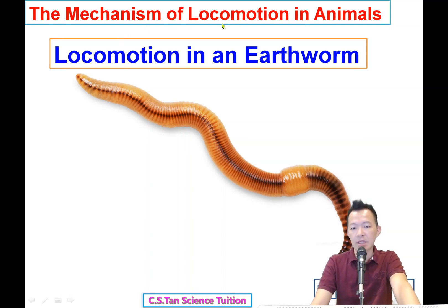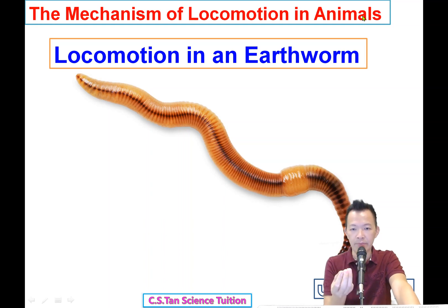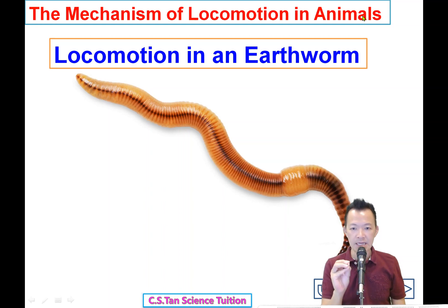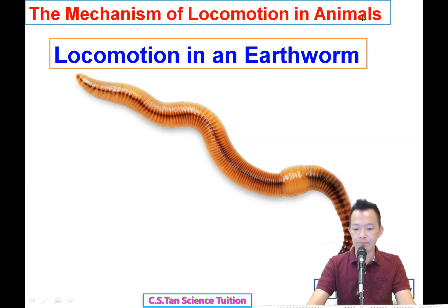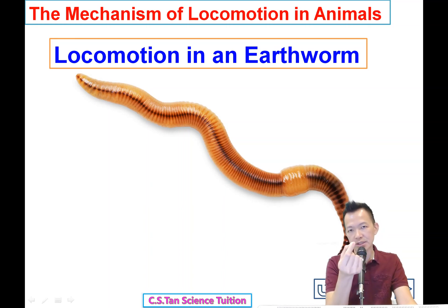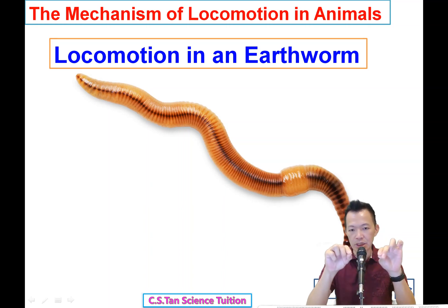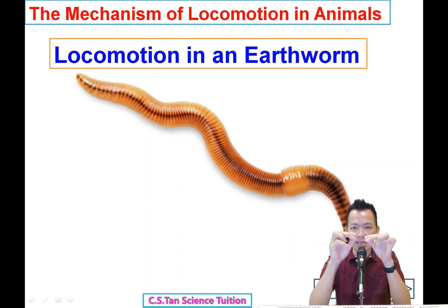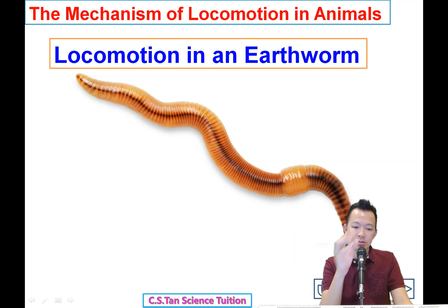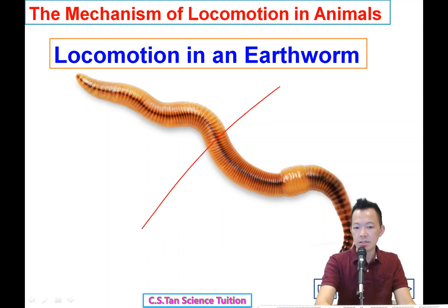Today we look at the mechanism of locomotion in animals — how different animals move their bodies. Our first animal will be the earthworm. Sometimes I catch an earthworm and pull it until it becomes longer and finally breaks into two.